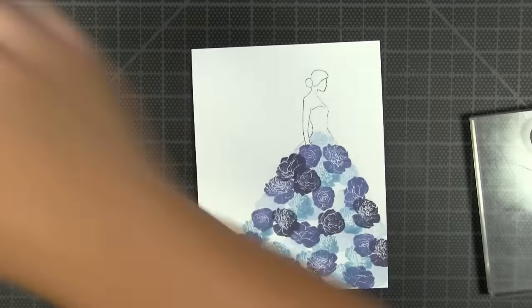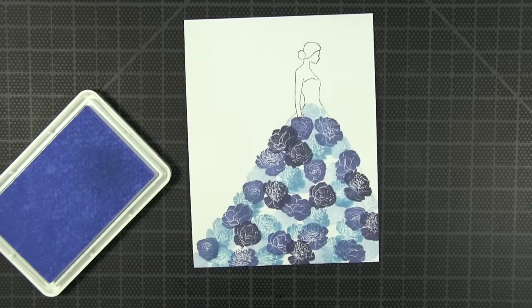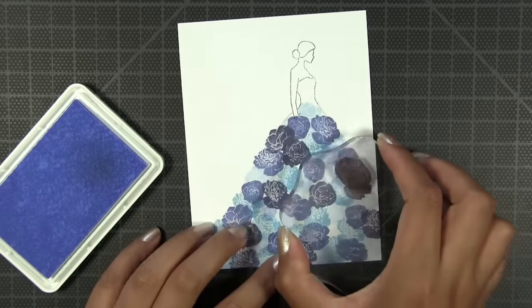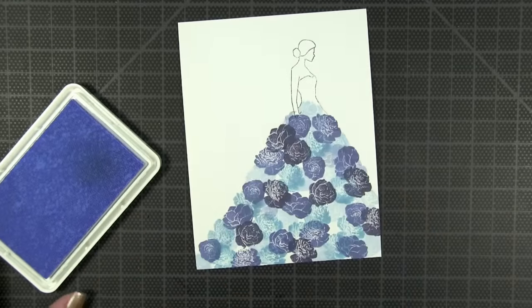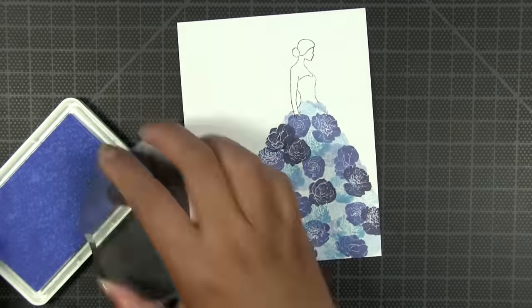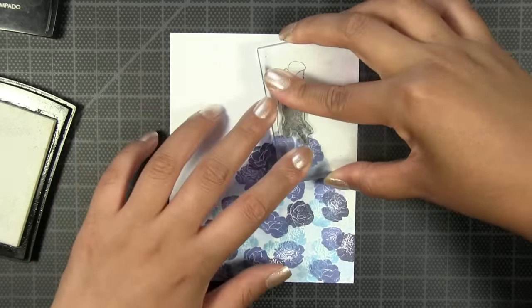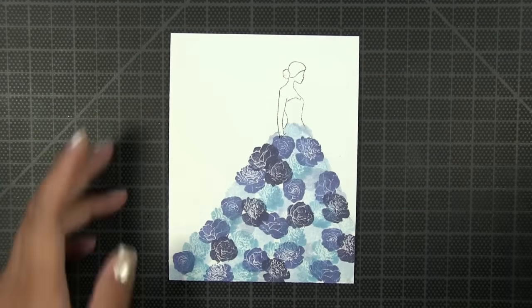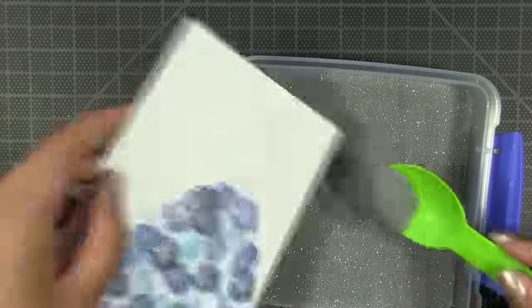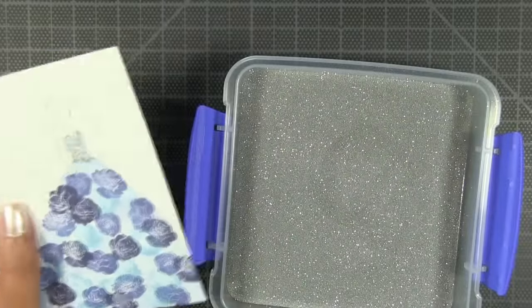Then I actually went back and filled in some more of the white spaces with the Arctic sky, and this is going to complete the skirt. Next I'm going to take the separate bodice portion of the dress which comes with the stamp set and I'm going to heat emboss this with silver glitter embossing powder.